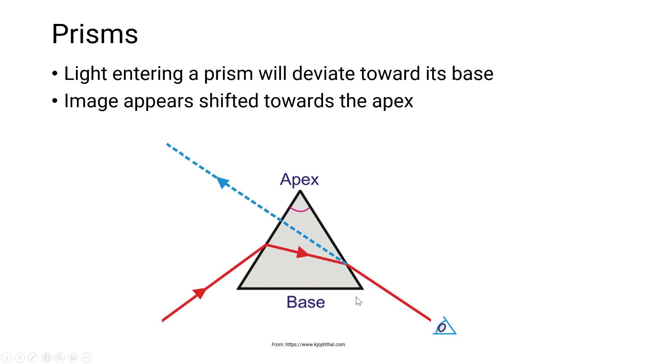Consequently, what happens is that the image appears to shift towards the apex of the prism. So for example, if we have a tree, the light's bouncing off the tree, passes through the prism, it will appear as if that tree shifts towards the apex.